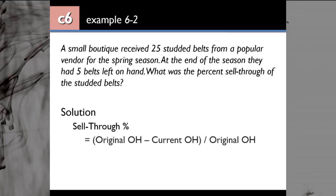Sell through percent = (Original Merchandise On Hand − Current Merchandise On Hand) ÷ Original Merchandise On Hand. Original merchandise on hand was 25, and current merchandise on hand is 5, meaning you sold 20. The denominator is original on hand — that's how much merchandise the retailer carried. So that is 20 ÷ 25, which gives you 80%. You can say that 80% of the belts were sold. This is a good sell through rate. A lower number means that type of item is not selling well.